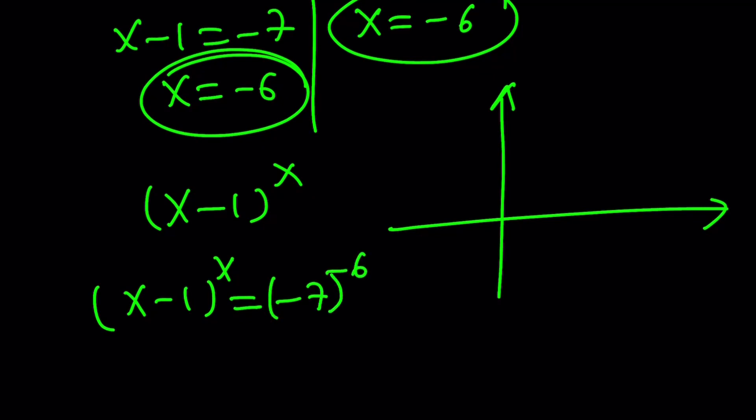Because originally, it was 1 over 7 to the 6, remember? This is a positive base. This is even. So the answer is greater than 0. So the y value we're going to be looking at is actually positive, which is good.